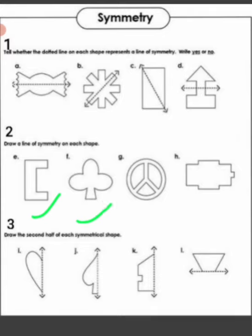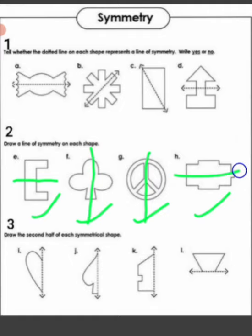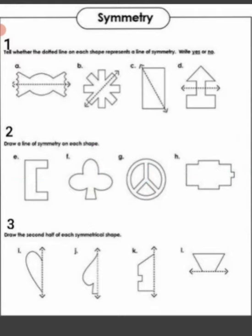Now here some more examples are given where you can draw a line of symmetry. For example, in the first one a vertical line, in the next one like this, and here a horizontal line. This way we can draw a line of symmetry and the parts become the same. In the third set, some patterns are given where half the figure is drawn, and you can complete it by drawing the other half.